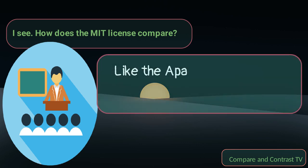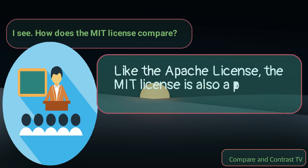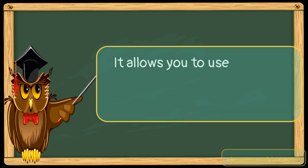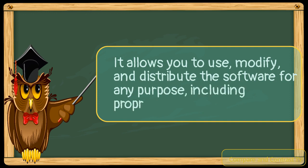Like the Apache License, the MIT License is also a permissive license. It allows you to use, modify, and distribute the software for any purpose, including proprietary software.